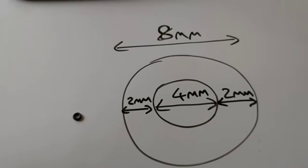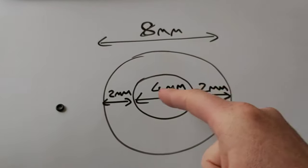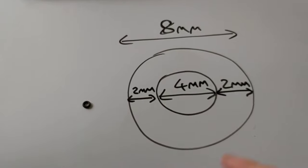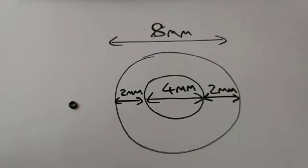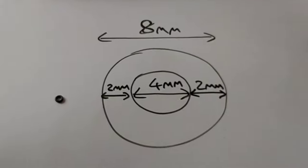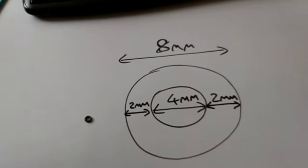And these are the dimensions of the ones that I bought. The inner diameter is four millimeters. And the actual ring itself is two millimeters thick, which gives an outer diameter of eight. So, that's the dimensions of the ring that you need to purchase.